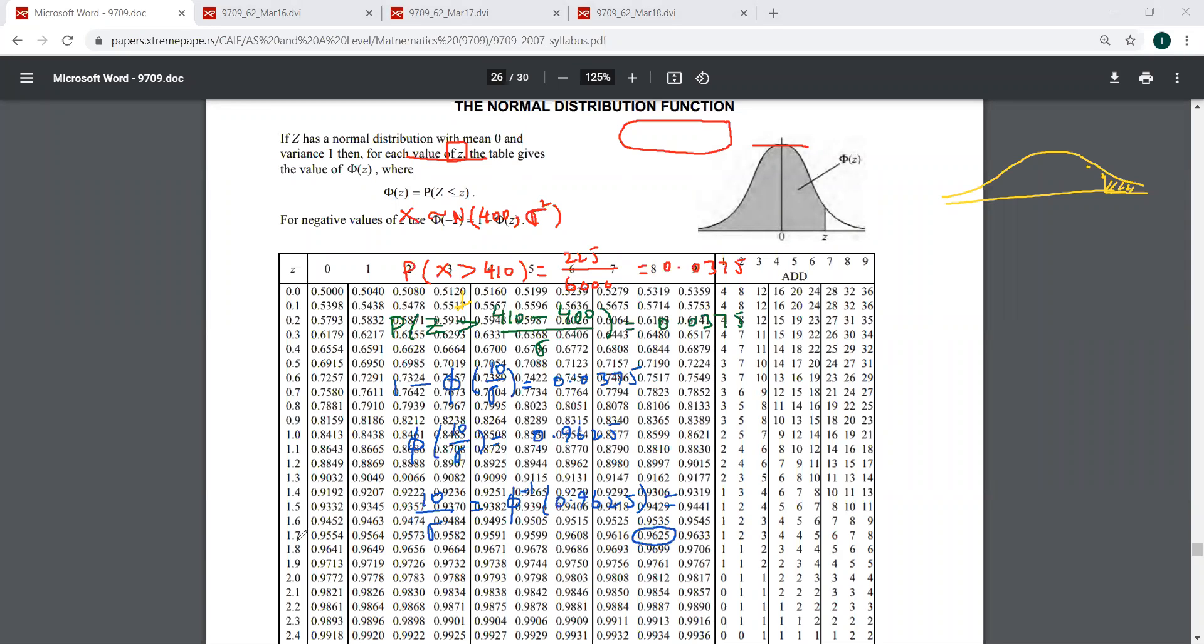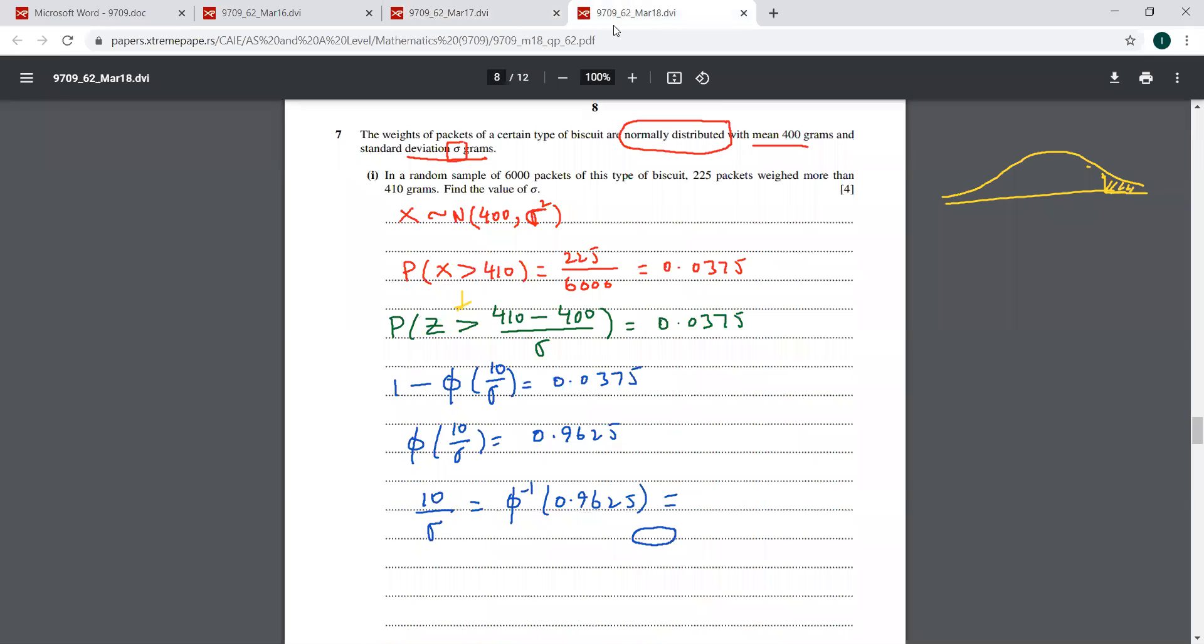This is 1.78. So the sigma is now going to be, this standard deviation is 10 over 1.78. So that is 5.62. So that is the required standard deviation.